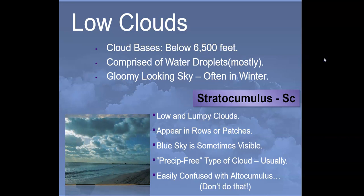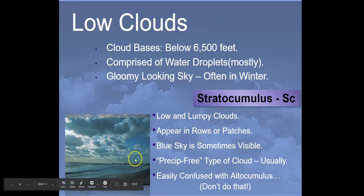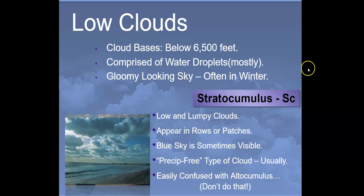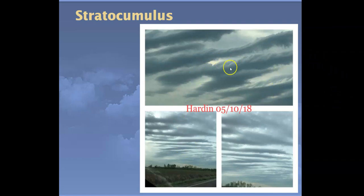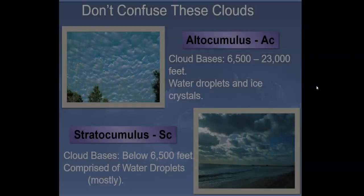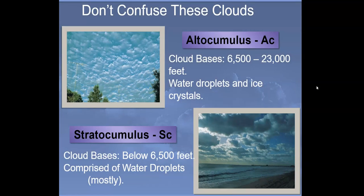Stratocumulus are low and lumpy and appear in rows and patches. If you've been to Florida or the coast, you'll often see these appear in the afternoon — they don't necessarily mean rain. The key distinction: stratocumulus are the low ones and altocumulus are the higher ones. Altocumulus bring rain; stratocumulus do not.